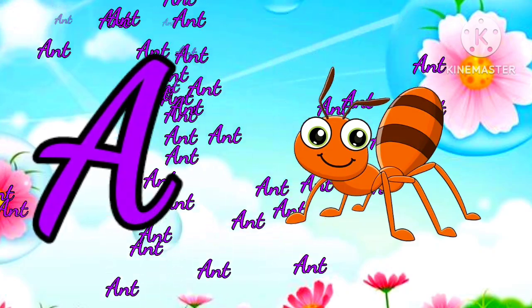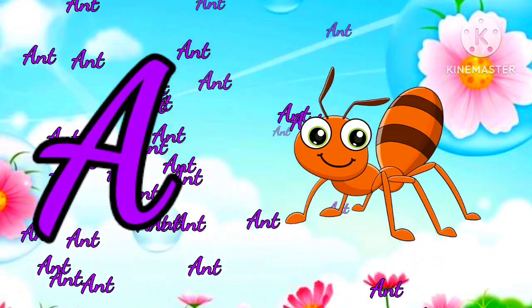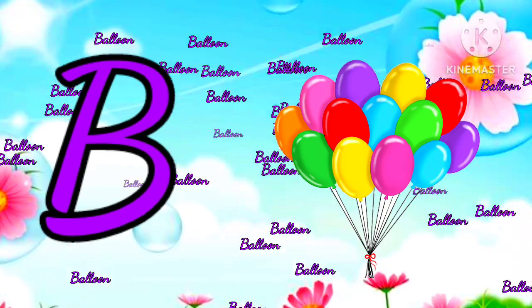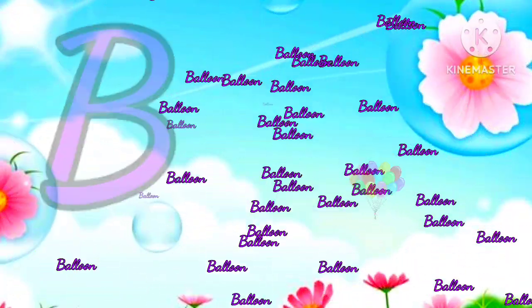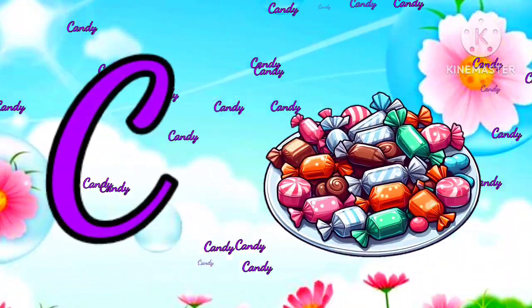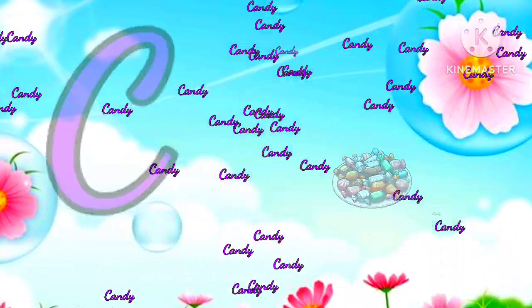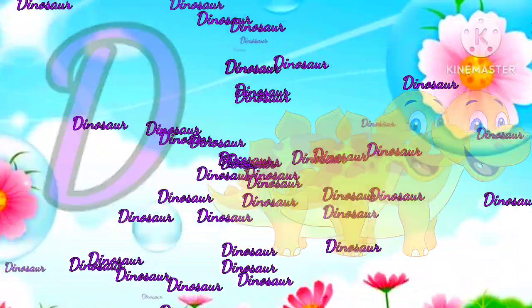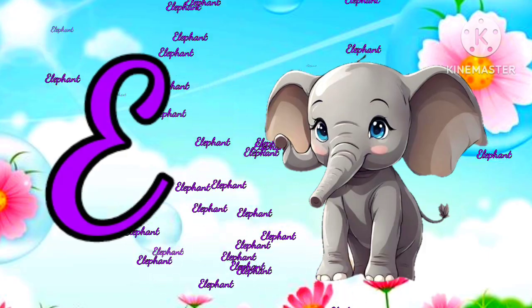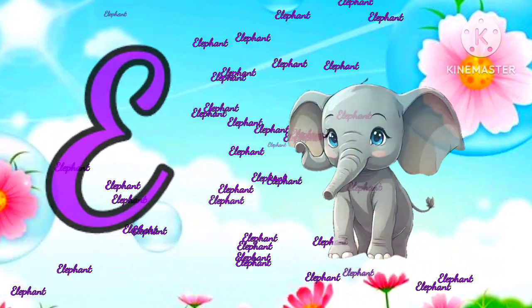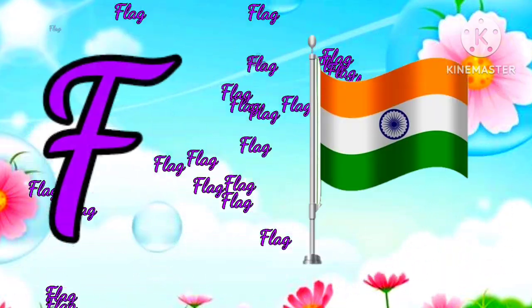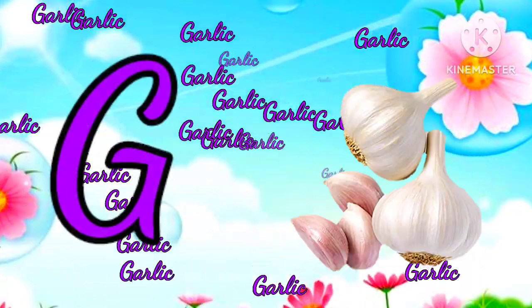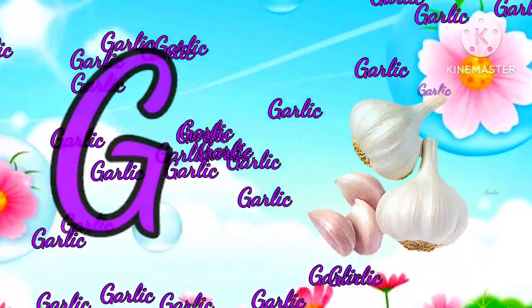A for ant, B for balloons, C for candy, D for dinosaur, E for elephant, F for flag, G for garlic.